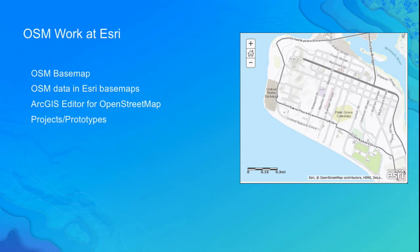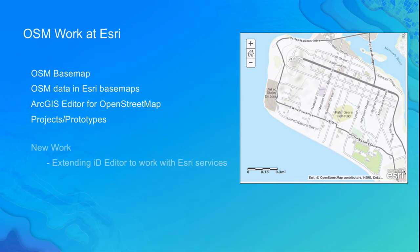The ArcGIS Editor for OpenStreetMap is an ArcMap-only extension that lets you pull down data from OSM into a file geodatabase. There are tools to extract, symbolize it, and things like that. You can also make local edits and push them back up to OpenStreetMap. I work in professional services, so OSM also comes up in project work — either as an explicit requirement or as the best option for fulfilling a customer requirement. We've also worked through some prototypes over the years.